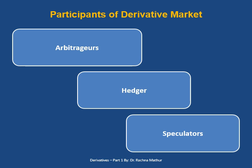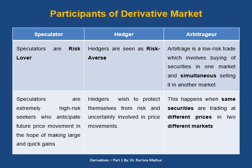Now let us see the participants of the derivative market: arbitrators, speculators, and hedgers. Speculators are risk lovers whose motive is to make maximum advantage of price fluctuations — they are extremely high risk seekers who anticipate future price movements in the hope of making large and quick gains. Hedgers are risk averse; they wish to protect themselves from the risk and uncertainty involved in price movements. Arbitrators are lower-risk participants who simultaneously buy securities in the lower-price market and sell in the high-price market. This is possible only when the same securities are traded at different prices in different markets.